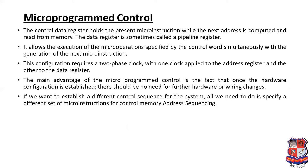The data register is sometimes called the pipeline register — it holds the current micro instruction while the next instruction is being fetched. The control data register allows the execution of micro operations to be specified by a control word simultaneously with the generation of the next micro instruction. This configuration requires a two-phase clock: the first clock is applied to the address register and the second to the data register. The main advantage of micro program control is that once the hardware configuration is established, there is no need for further hardware or wiring changes — to establish a different control sequence, all we need is to specify a different set of micro instructions for control memory.